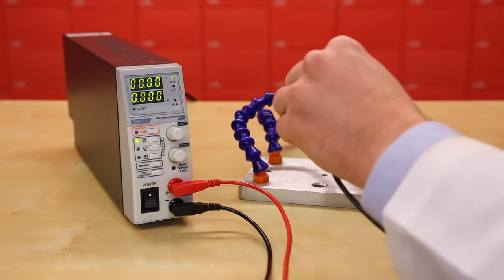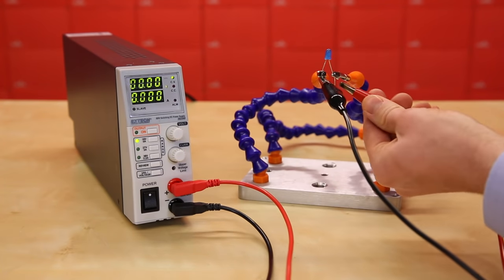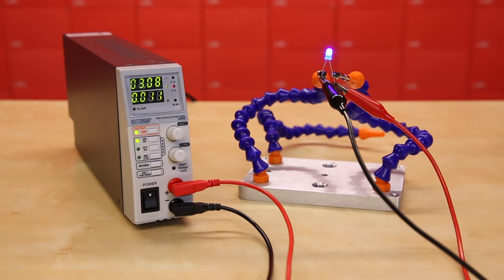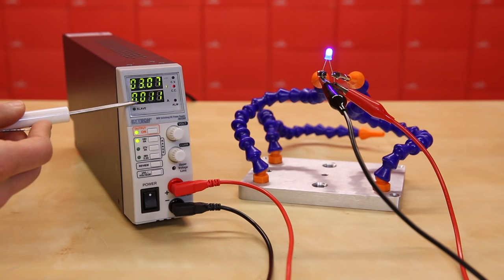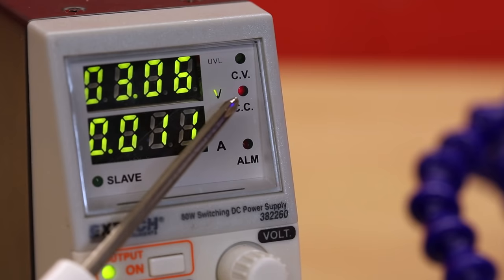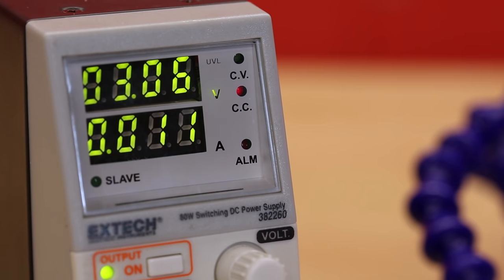Attach the negative clip to the cathode and the positive clip to the anode and turn on the output. You should see the LED light up. You'll also notice that we've maxed out the current on the supply. It won't go above the about 10 milliamp limit we set. The constant current light should come on, telling us that we've hit our current limit and that the supply is now acting as a constant current source.